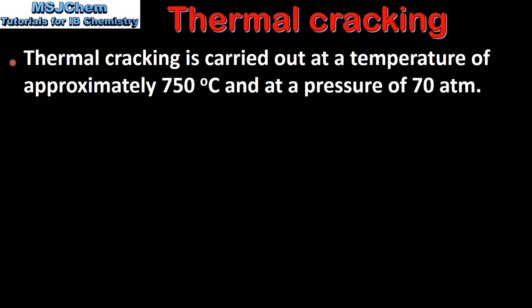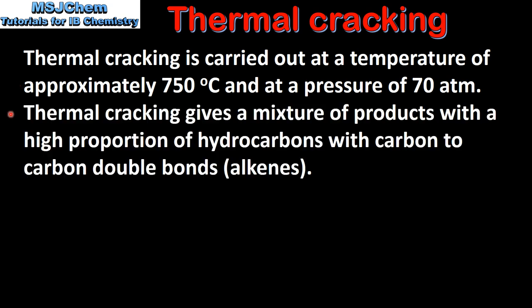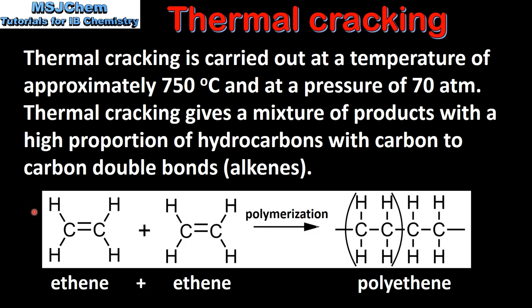Next we look at the two types of cracking: thermal and catalytic. Thermal cracking is carried out at a temperature of approximately 750 degrees C and at a pressure of 70 atmospheres. Thermal cracking gives a mixture of products with a high proportion of hydrocarbons with carbon-to-carbon double bonds.